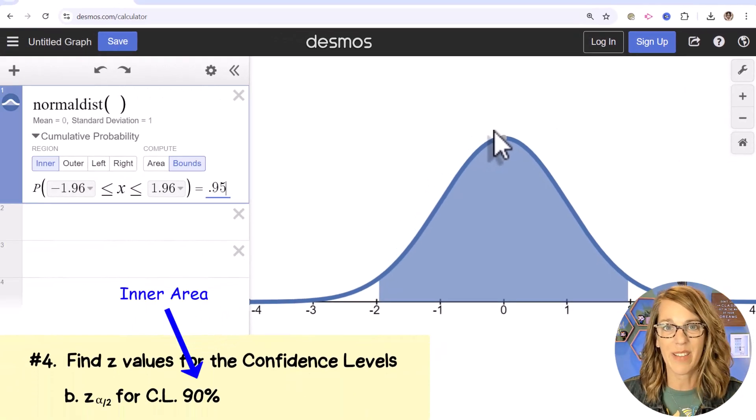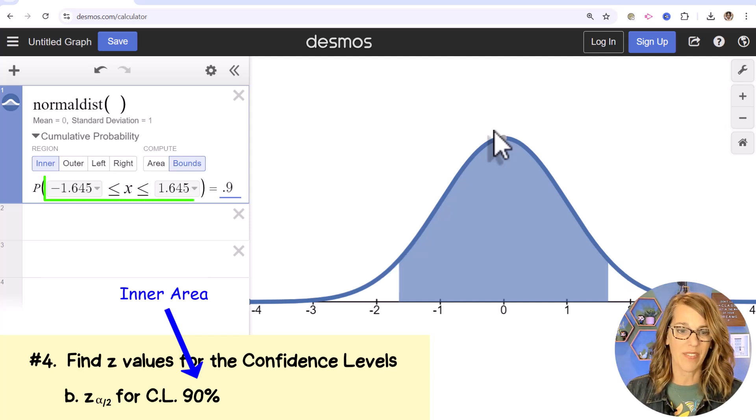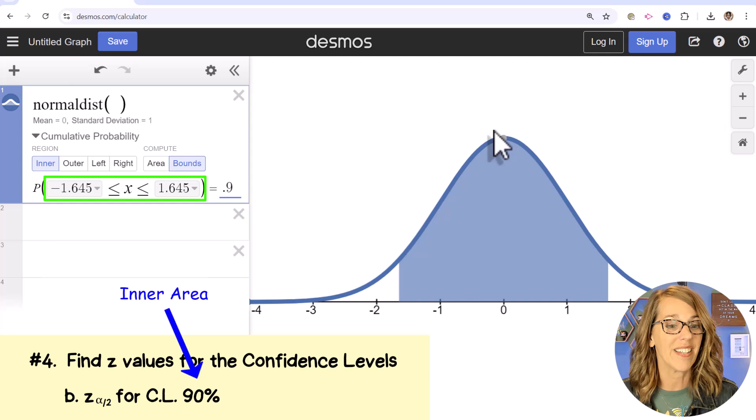Part B is exactly like part A, but this time I've got an inner 90%. So let's just get rid of that 5. So we've got an inner 90%. My z-score cutoffs are negative 1.645 and positive 1.645.